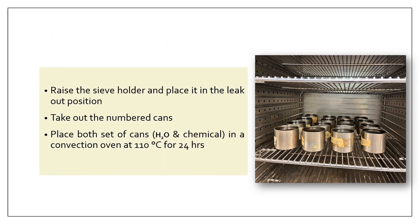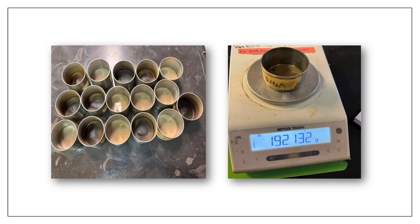Now raise the sieve holder and place it in the leak out position. When there is no water leaking out of the sieves, take out the numbered cans. Now place both sets of cans, that is the water and the chemical ones, in an oven at 110 degrees Celsius for 24 hours or until the water has evaporated. These are the cans with soil after taking out from the oven - now their weights should be taken.